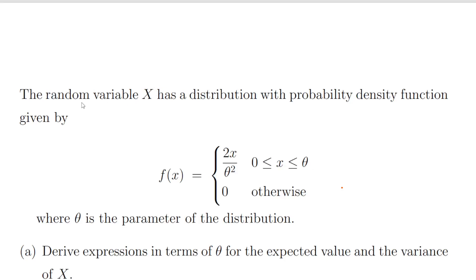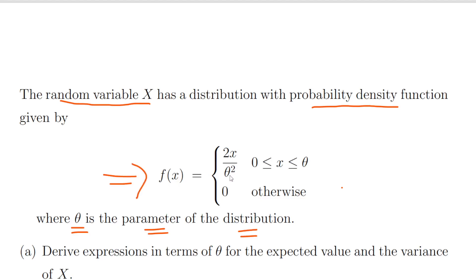In this presentation we are going to look at continuous random variables. Here we have a continuous random variable x with the following probability density function given in terms of theta, which is the parameter of the distribution. f of x equals 2x divided by theta squared, where x is between zero and theta, and it is zero otherwise. This will inform us what the limits of our integral should be when we start doing definite integrals.